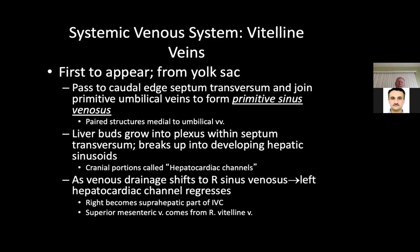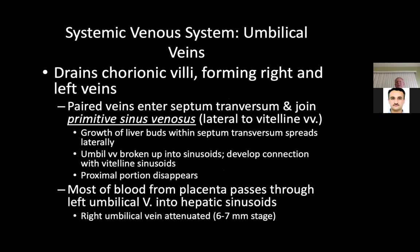Liver buds grow into the plexus within the septum transversum — that's why the liver veins come in separately into the right atrium. As the sinus venosus drainage shifts to the right sinus horn, the left hepatic cardiac channel regresses. The umbilical veins are broken up into sinusoids, develop connections with vitelline sinusoids, and then the proximal portion disappears.